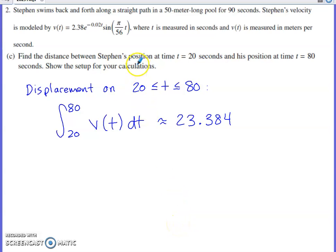Part C, find the distance between Stephen's position at time 20 and time 80. Show the setup for your calculations. So this would be his displacement on the interval from 20 to 80. And if you think about the fundamental theorem of calculus, to evaluate this integral, what you would do is you would find the antiderivative of velocity, which is a position function. You would toss in 80, you would toss in 20, and you would take a difference. So by definition, this integral right here is going to give us Stephen's displacement. We have to show the integral.